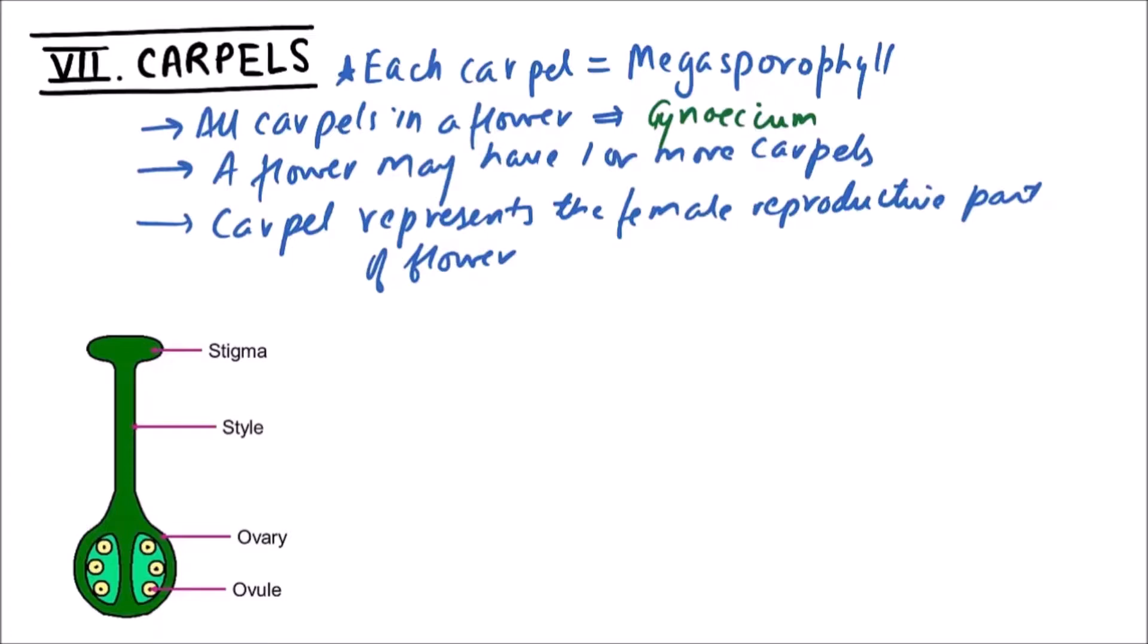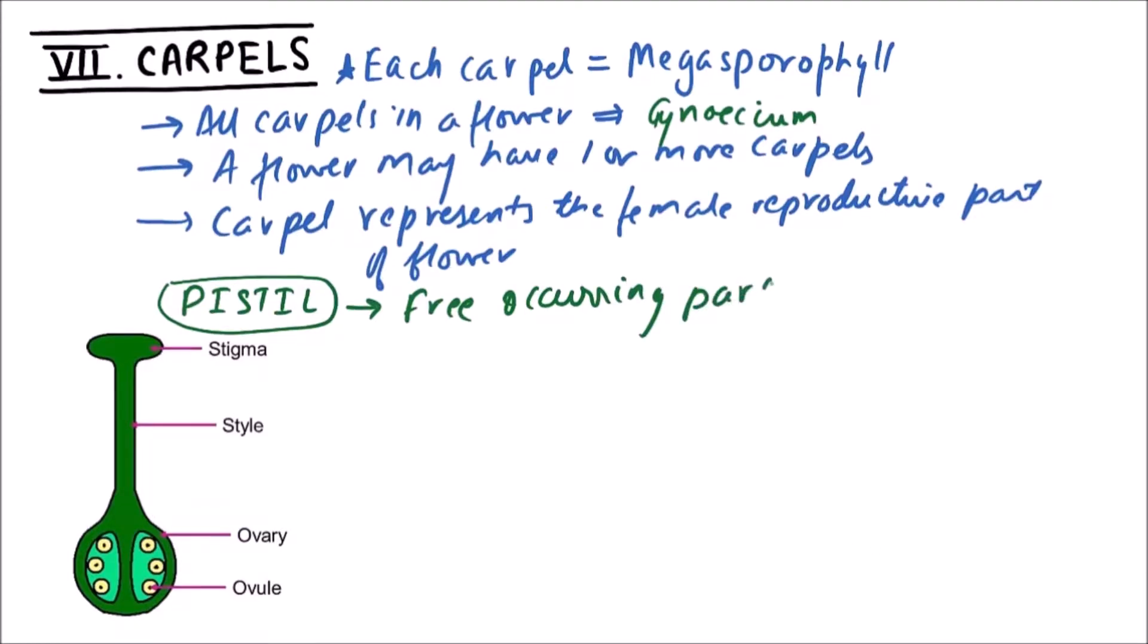There is a term Pistil. What is Pistil? The free occurring part of Gynetium is Pistil. A Pistil may have one or more carpels.